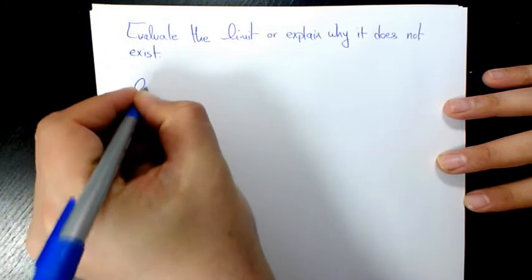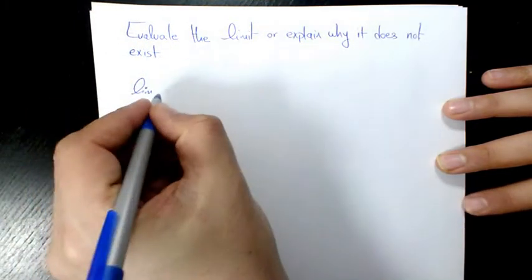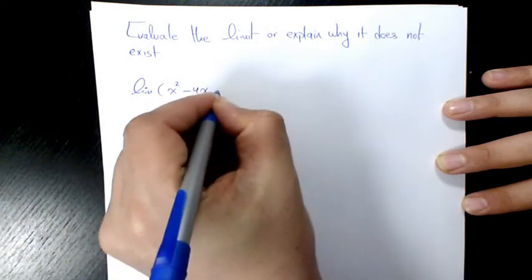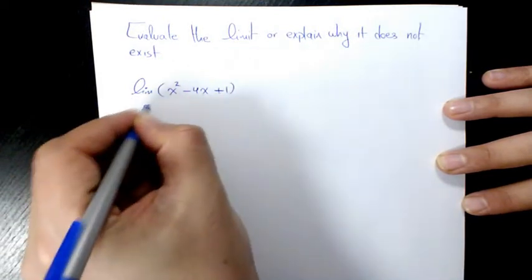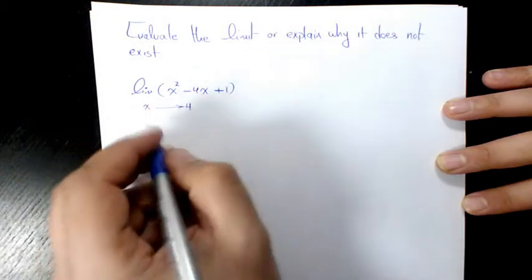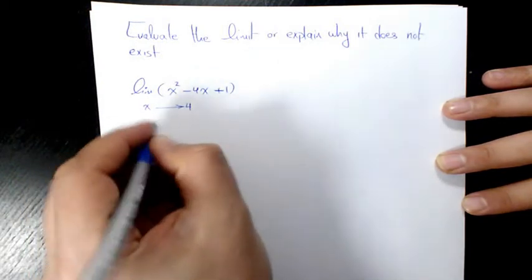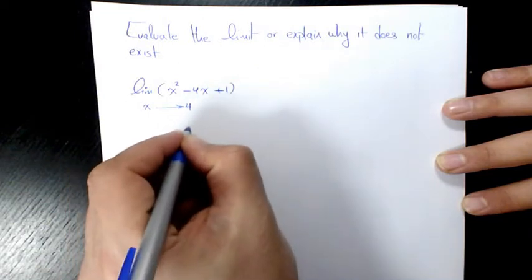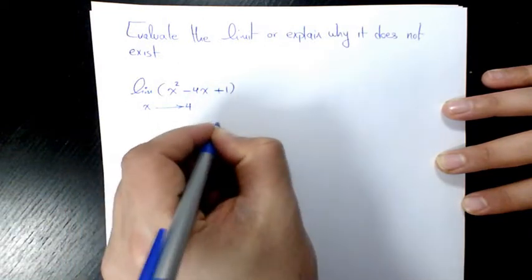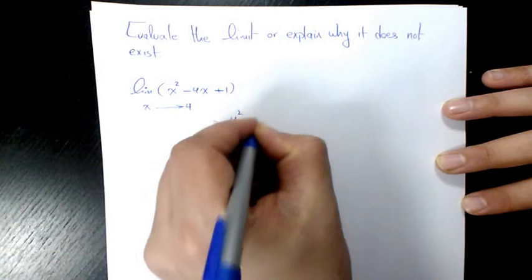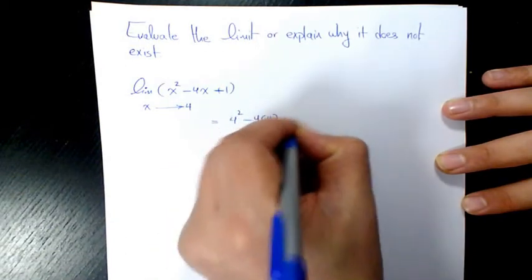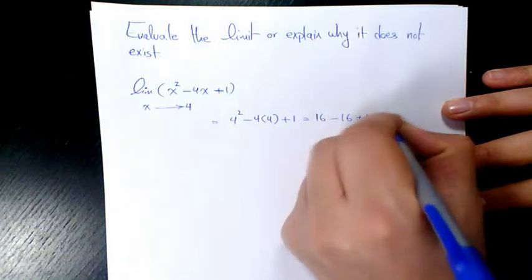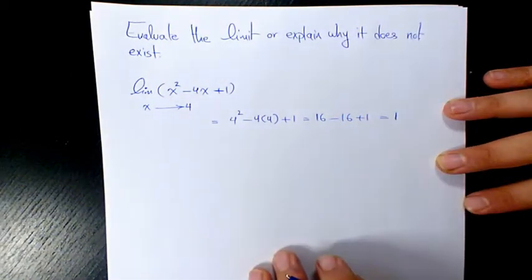First example — I'm going to start from simple examples to more difficult examples. The limit of x squared minus 4x plus 1 when x is approaching 4. We're going to say that the limit from both sides is going to be 4 squared minus 4 times 4 plus 1, which is 16 minus 16 plus 1, which equals 1.